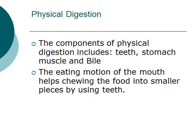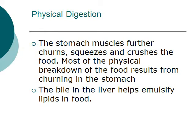So, what are the components for physical digestion? The components are the teeth, the stomach, the muscle and bile. The eating motion of the mouth helps chew the food into smaller pieces by using the mechanical motion of chewing and your teeth. The stomach muscles further churn, squeeze and crush the food.